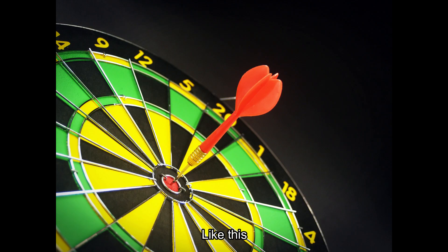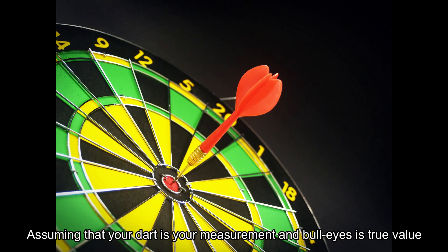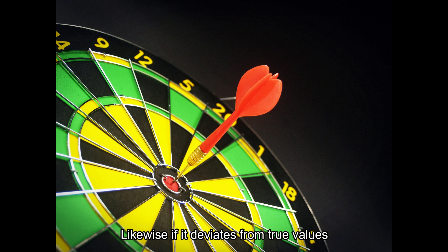Assuming that your dot is your measurement and the bullseye is the true value, if your measurement is close to the center, it's high accuracy. Likewise, if it deviates from true values, then it's called low accuracy.